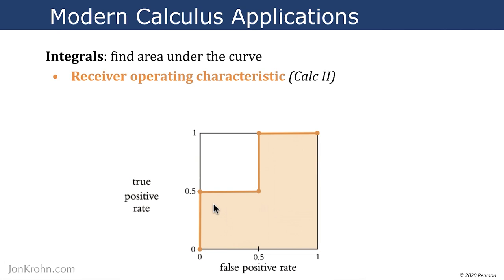The receiver operating characteristic is this curve shown in orange here. And the area under that curve is a very common metric and very powerful metric when we have a kind of machine learning model called a binary classification model.